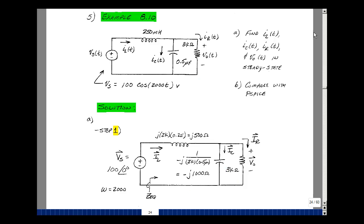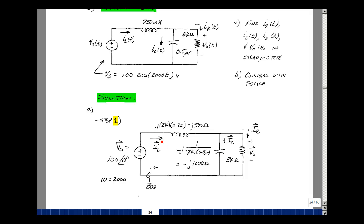Step two, we'll do the analysis. Since we want to find this current here, I sub L, let's find the impedance looking into this circuit. And then we'll just divide that impedance into V sub S.